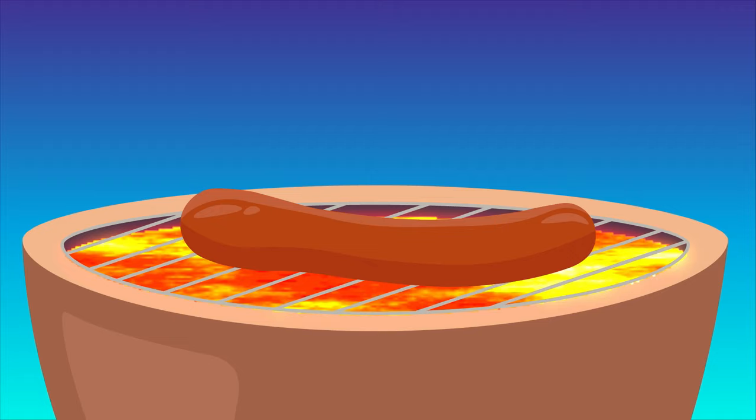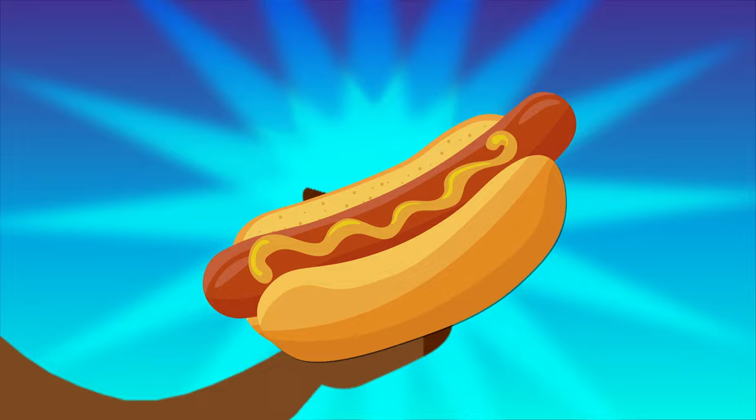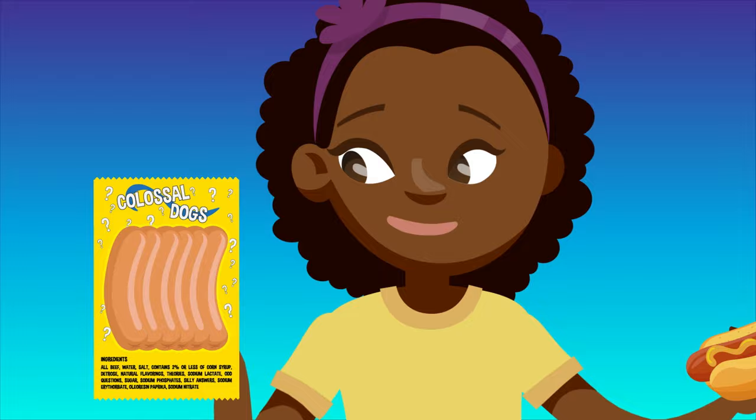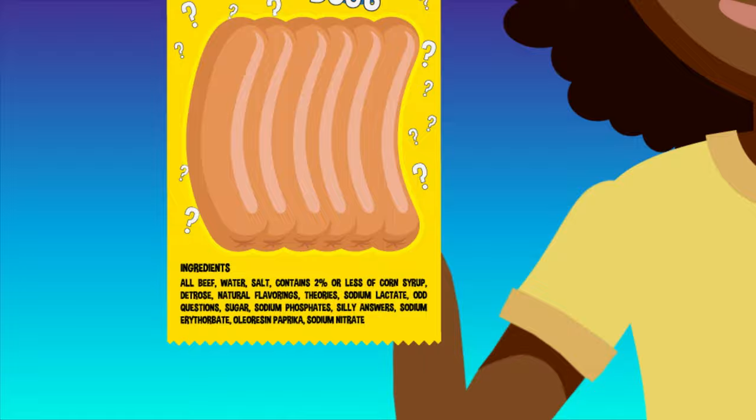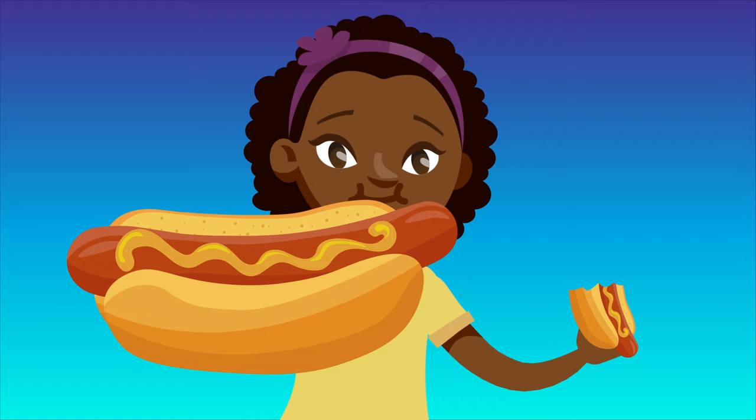This might sound kind of gross, and honestly, it kind of is. But it's important to point out that it's all above board, edible, and USDA approved. And if you love hot dogs, but all that pink paste makes you a little queasy, just look for all natural dogs. Any product labeled as all pork or all beef is going to be the kind of muscle meat you're likely much more used to eating in steaks or other meals. And now that you know how the hot dogs are made, let's pull out the condiments. Because it's time to eat, if you dare.